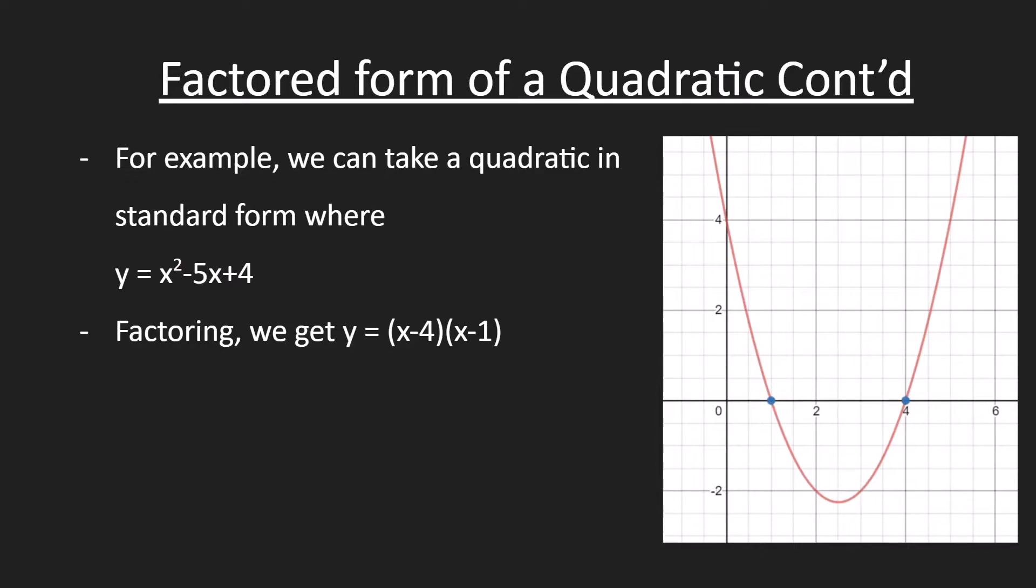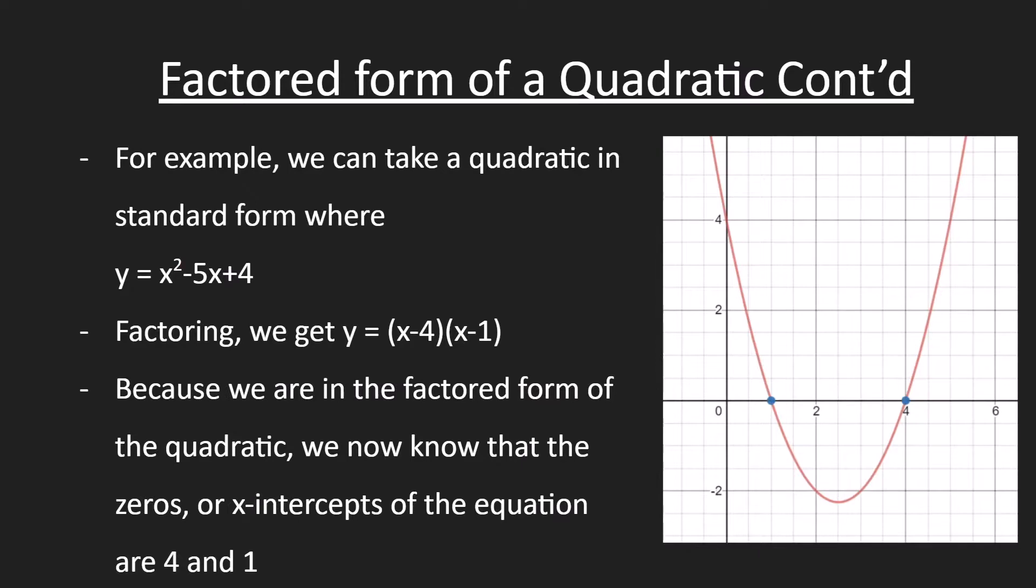If you don't know how to factor it, you can check out our other video about factoring. Because we are in the factored form of the quadratic, we now know that the zeros or x-intercepts of the equation are at 4 and 1.